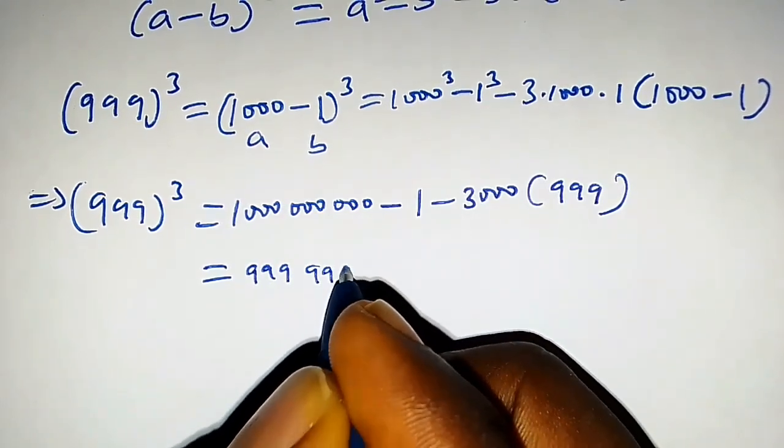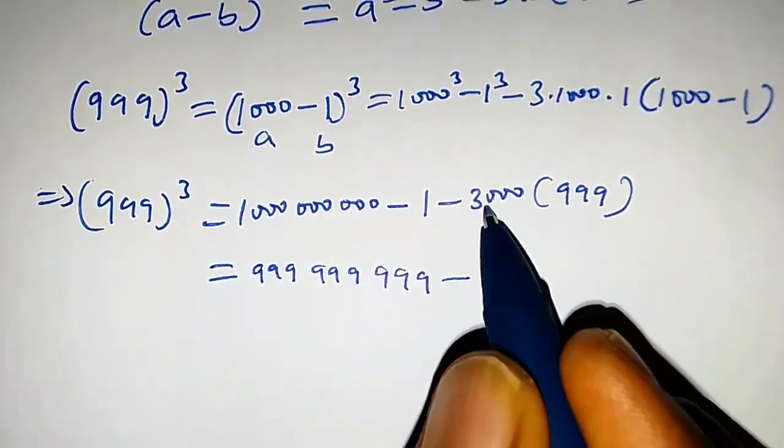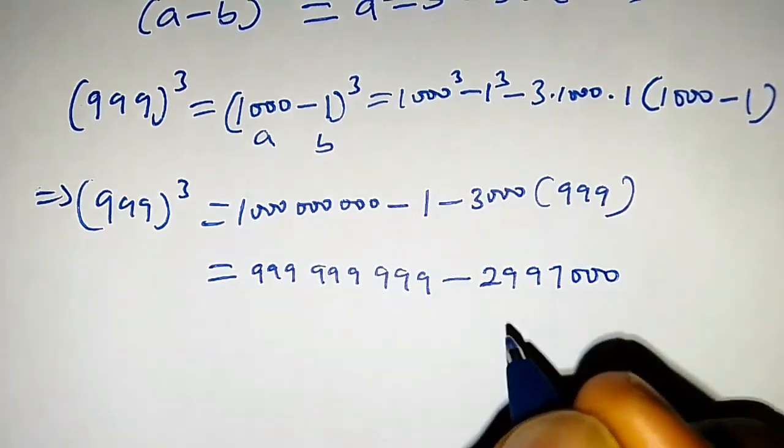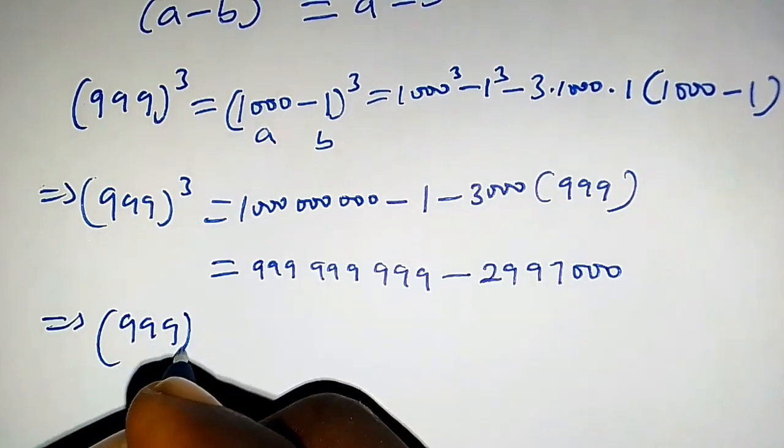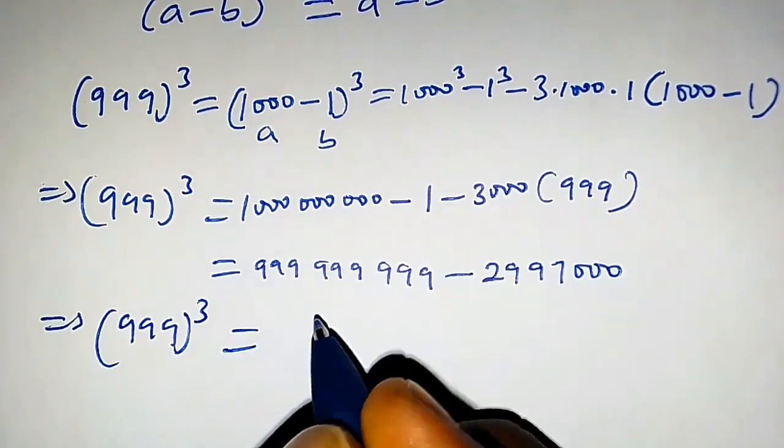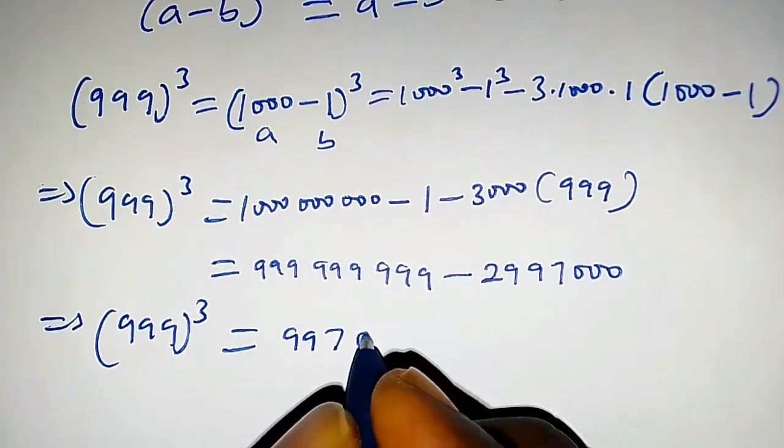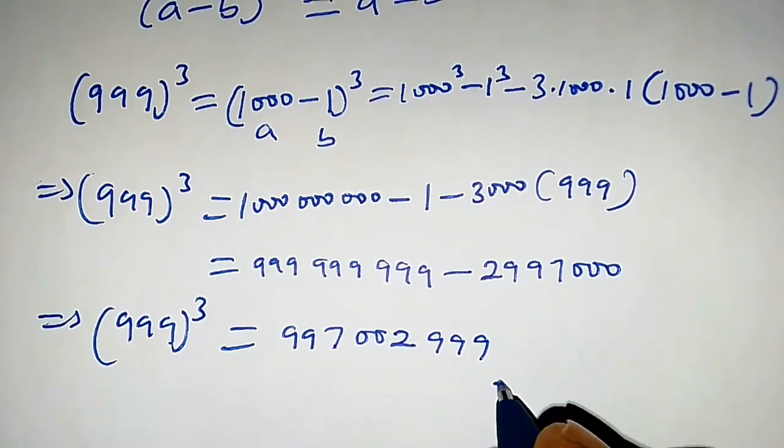999,999,999 minus this times this we have 2,997,000. This implies 999 raised to the power 3 is equal to, when we subtract this, we're going to have 997,002,999, which is the required solution.